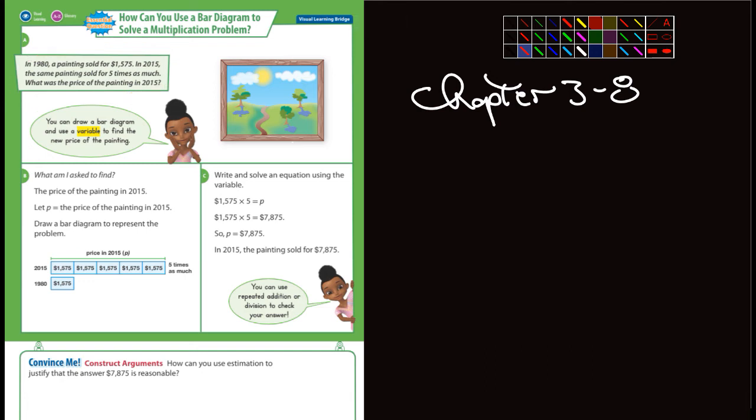Well, you can see the steps that they've taken here. First, they did a bar diagram. And in each one, they put $1,575 in 2015, and then one bar because that was its cost in 1980. And really, all you'd have to do is multiply $1,575 times five to get P. P represents the price. And there, they've done it there for us.